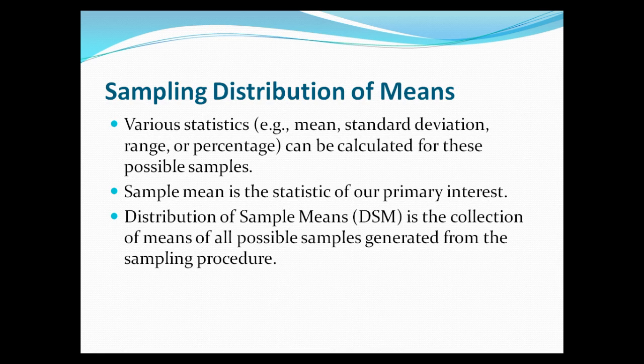The sample mean is our primary statistic of interest. Most often our research questions look at mean differences between different groups, or look at a group across time. Within that we have a distribution of sample means, which is a collection of the means of all possible samples generated from the sampling procedure. This is the DSM, and this term will come up a lot.